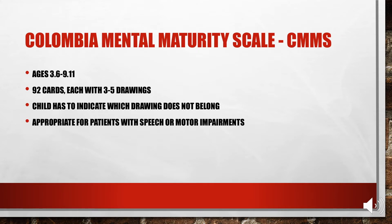The Columbia Mental Maturity Scale, CMMS, is used for ages 3½ through 9. It consists of 92 cards, each with 3 to 5 drawings, and the child has to indicate which drawing doesn't belong. This is another measure you can use with patients with speech or motor impairments. To remember this, think about the name — Mental Maturity Scale — it's looking at mental maturity, not speech or motor maturity. It was originally designed to assess patients with cerebral palsy.